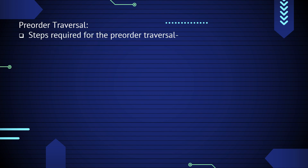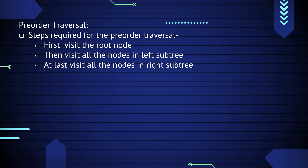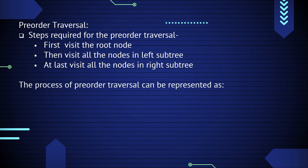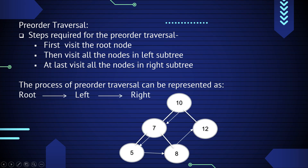First we will understand pre-order traversal. The steps required for pre-order traversal are: first visit the root node, then visit all the nodes in the left subtree, and at last visit all nodes in the right subtree. The process of pre-order traversal can be represented as Root-Left-Right. Here is a diagrammatical representation of pre-order traversal.